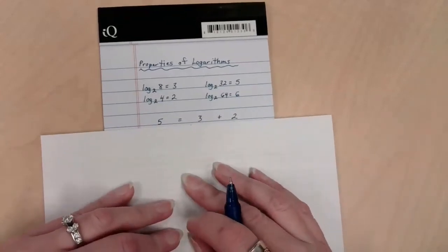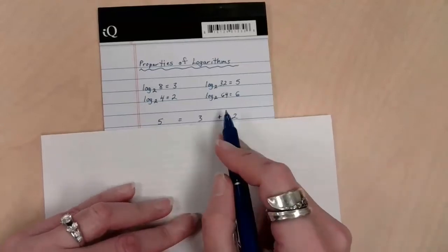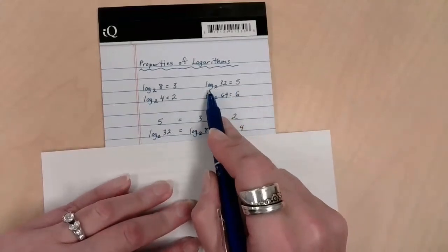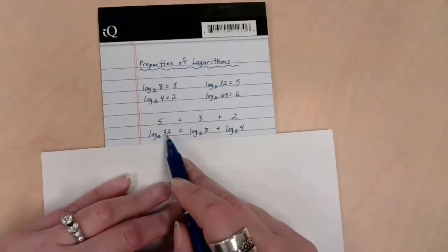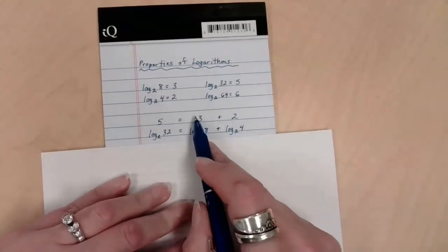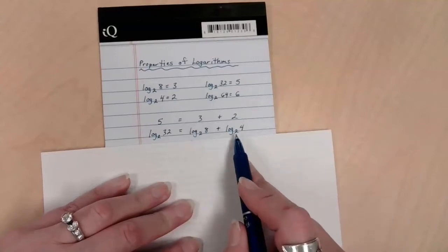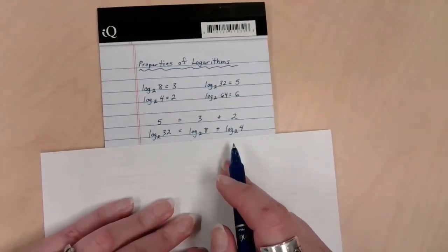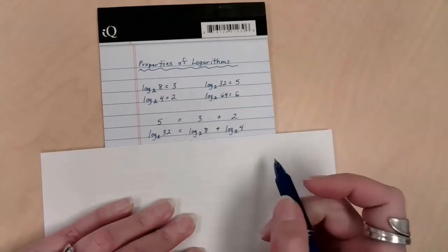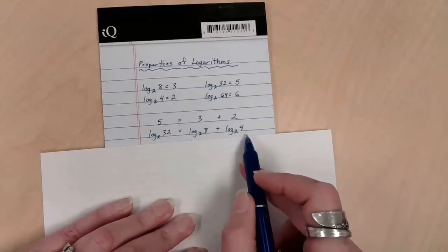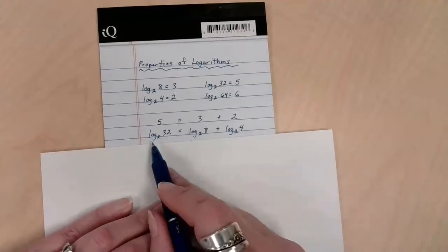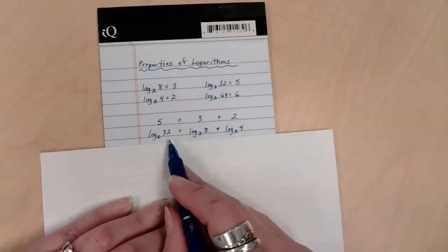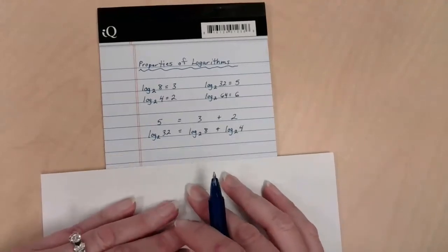Can we agree that five equals three plus two? If that is true, based on what we have up here, that means this statement should also be true. Since five is the equivalent to log base two of 32, I'm going to replace it with log base two of 32. And since three is the equivalent of log base two of eight, I'm plugging log base two of eight in place of three, and taking something that's the equivalent of two and plugging it in place.